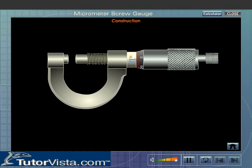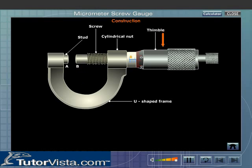The screw gauge has a U-shaped frame with a flat end A called the stud. There is a long cylindrical nut at the other end. The nut is threaded from inside. There is a screw with a flat end B that can move inside the nut by rotating a hollow cylinder or thimble provided at the other end.